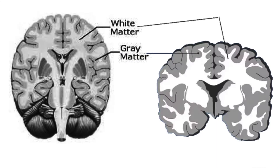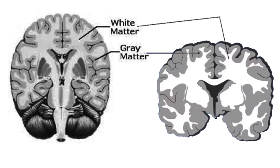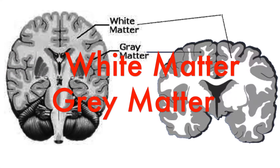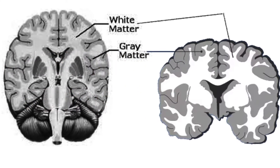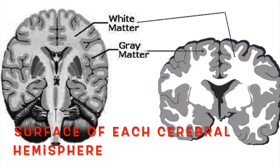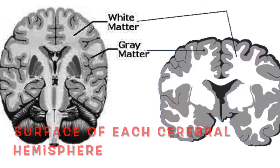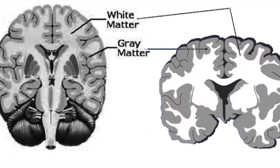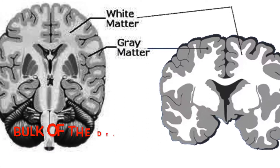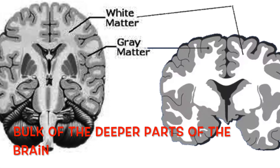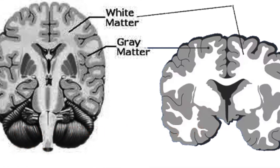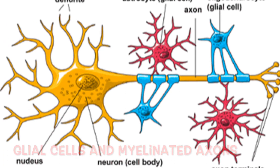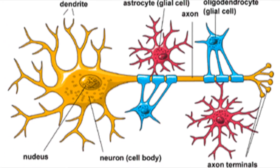There are two main tissues that form the brain: gray matter and white matter. Gray matter forms the surface of each cerebral hemisphere, also known as the cortex. White matter forms the bulk of the deeper parts of the brain, consisting of glial cells and the myelinated axons that connect the various gray matter areas.